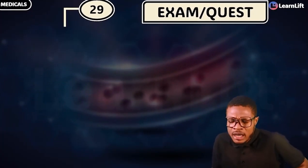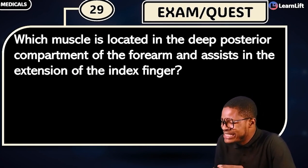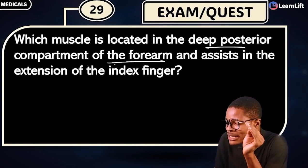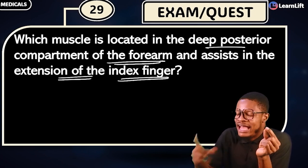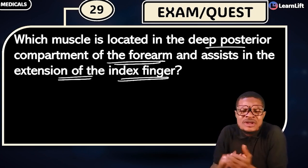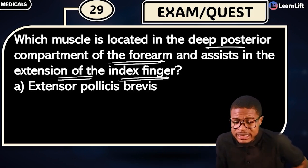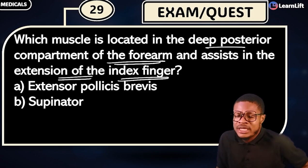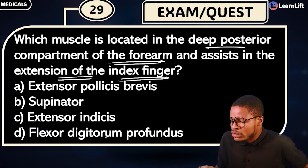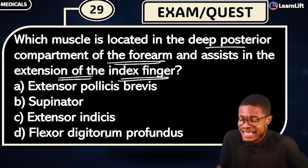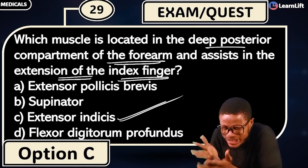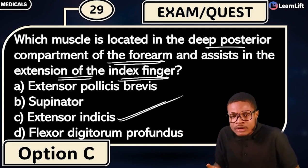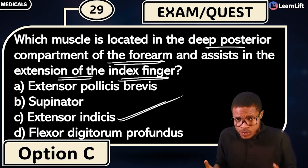Question 29: Which muscle is located in the deep posterior compartment of the forearm that assists in the extension of the index finger? Option A: extensor pollicis brevis. Option B: supinator. Option C: extensor indicis. Option D: extensor digitorum profundus. The answer is option C — extensor indicis. From the name alone you can understand exactly what it does.